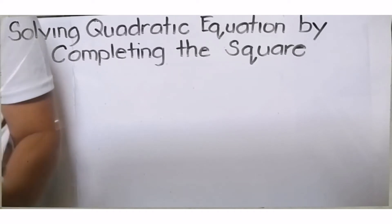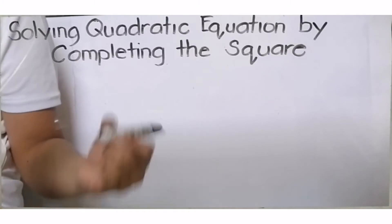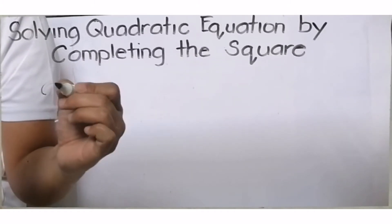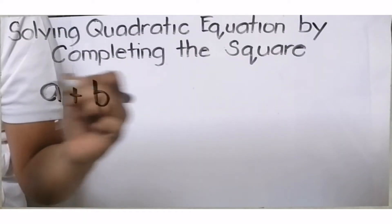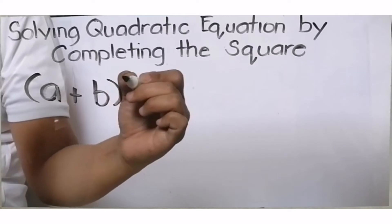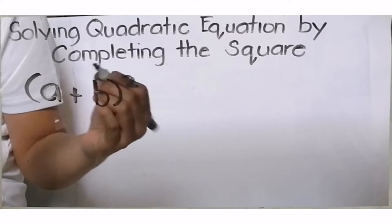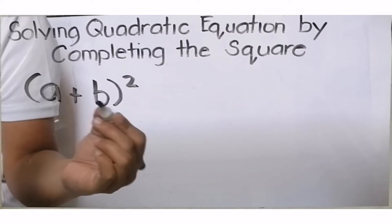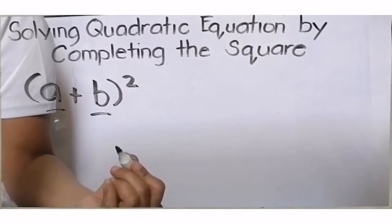Before we proceed to solving quadratic equations by completing the square, we need to know how to square a binomial. Let's review. Let's get the square of A plus B. Let's identify the parts of each term. This will be our first term, and B will be our last term.